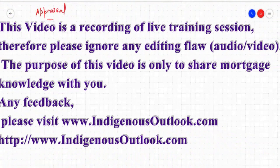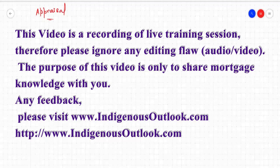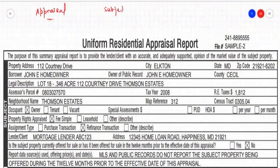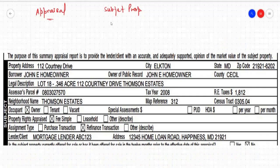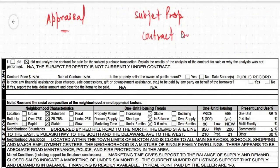It's an entire set of different documents. It is going to give us, especially for the subject property — what is the subject property. So subject property detail, then contract detail, sale contract, purchase contract detail. Contract detail will include things like: this property is being sold at this price.